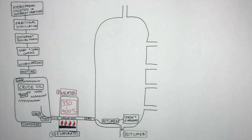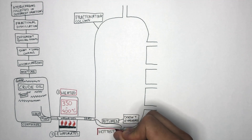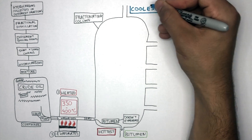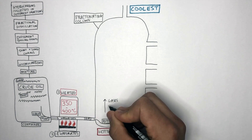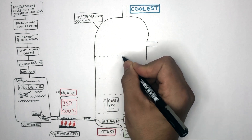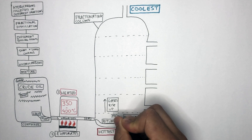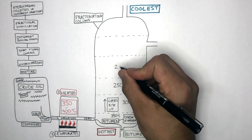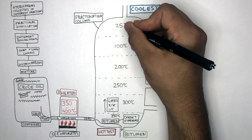This is a very simplified diagram of the fractionating column. It's hottest at the bottom where it's closest to the heat source, and coolest at the top where it's furthest away from the heat source. Because gases are less dense, the gases rise upwards. The column can be split into different sections based on temperature: roughly 350 degrees Celsius at the bottom, then 300, 250, 200, 100, and approximately 25 degrees Celsius at the top.